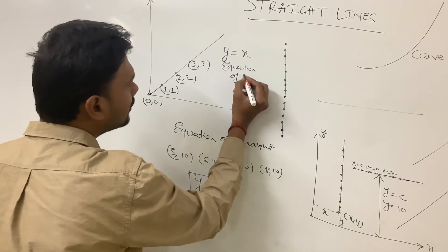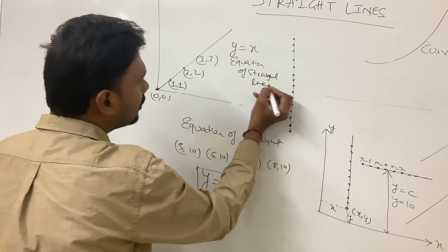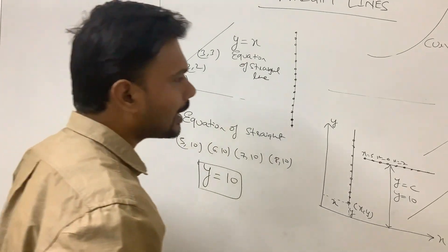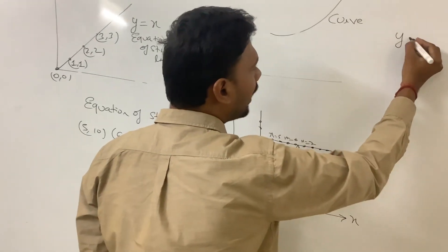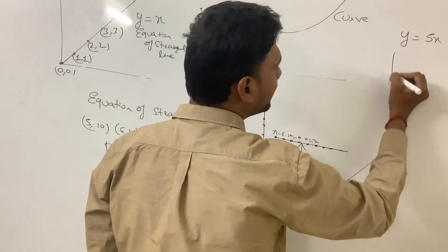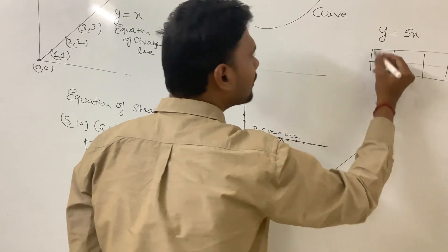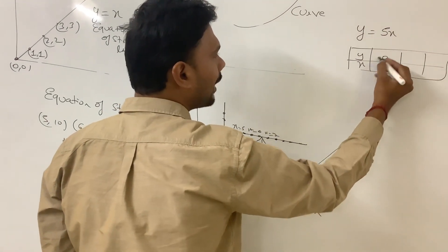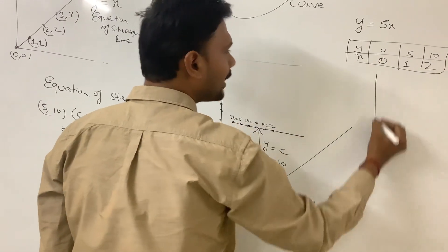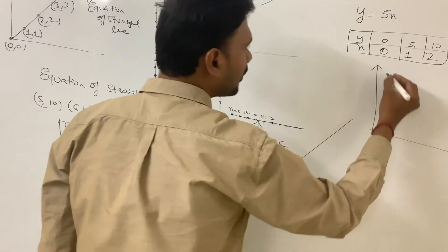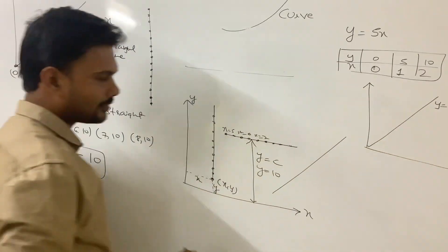We can have another example of a straight line: y = 5x. For different values of x and y, they satisfy this relation. When x = 0, y = 0; when x = 1, y = 5; when x = 2, y = 10. We can plot these points and get the straight line described by y = 5x.